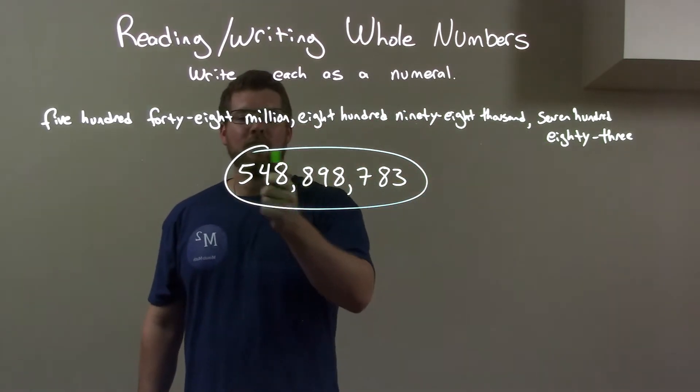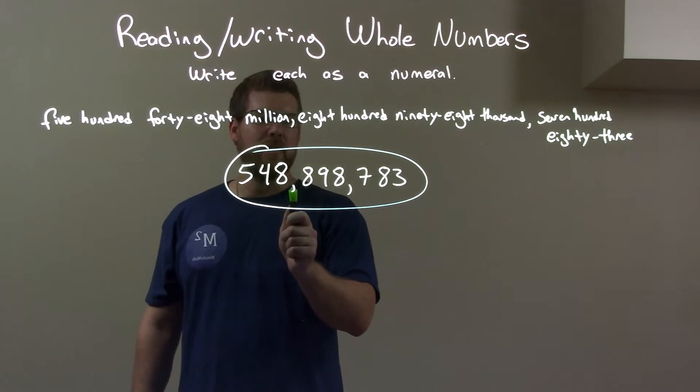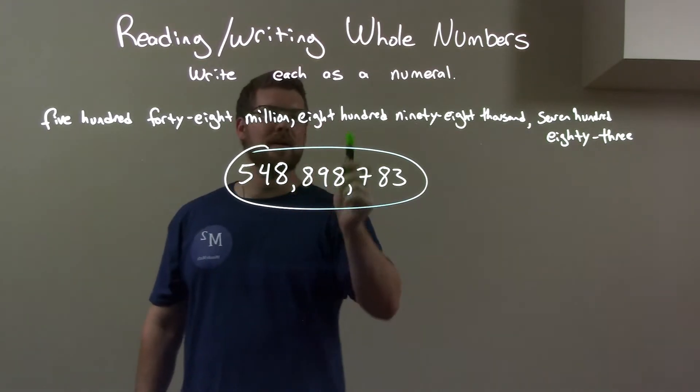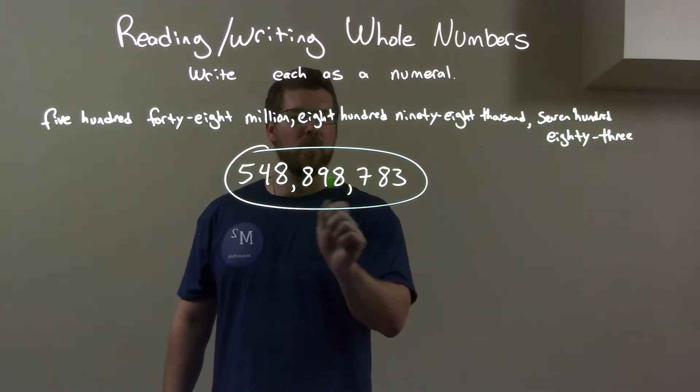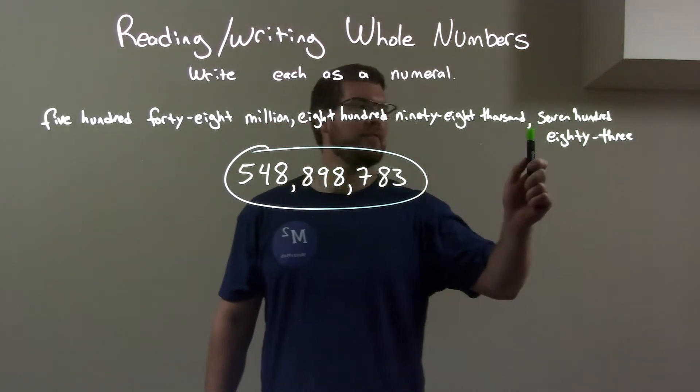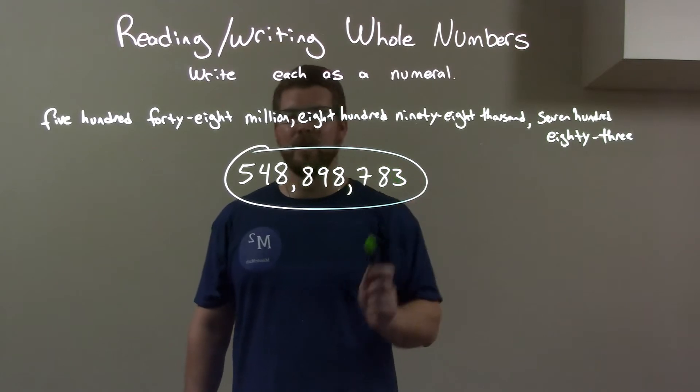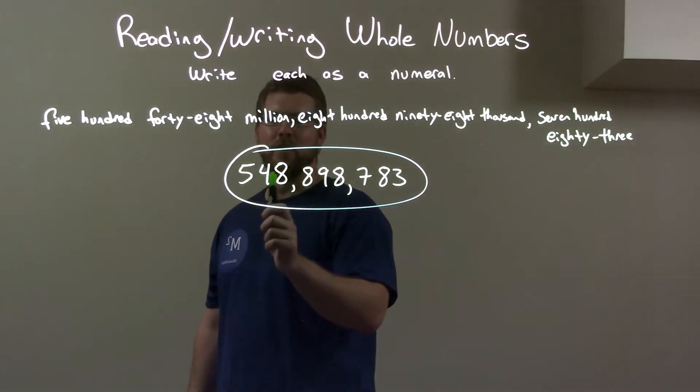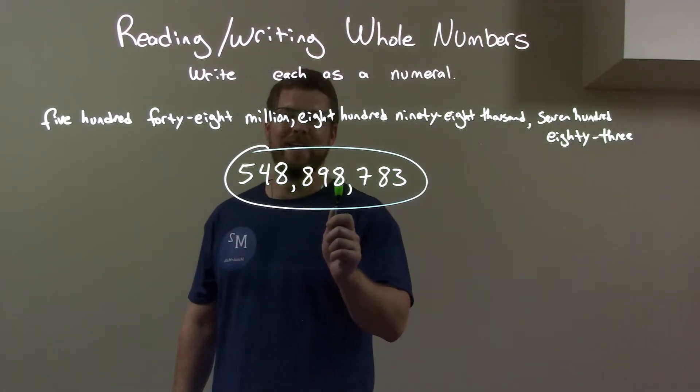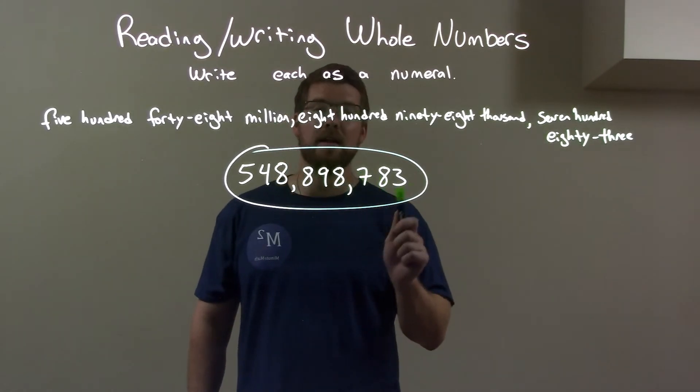Well, first, we have five hundred and forty-eight million right here with six spaces afterwards. Then, we deal with the eight hundred and ninety-eight thousand with three spaces afterwards. And then, we have seven hundred right there as eighty-three in the last little bit. So, together, we have five hundred and forty-eight million, eight hundred and ninety-eight thousand, seven hundred and eighty-three.